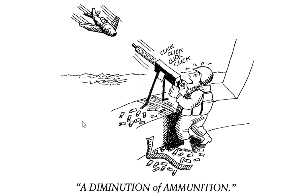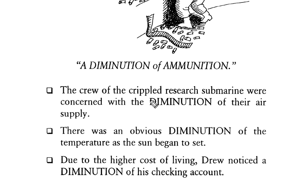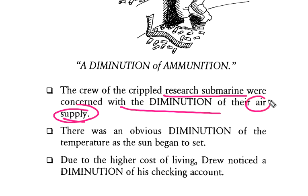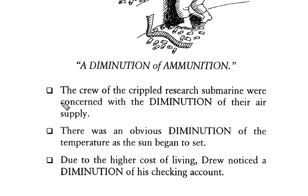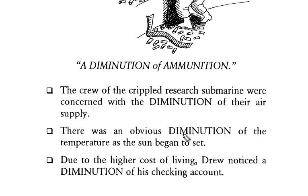Examples: The crew of the crippled research submarine were concerned with the diminution of their air supply — air supply unke kya horote te, khatam horote te, diminution of their air supply. There was an obvious diminution of the temperature as the sun began to set — sun jaise set ho raha tha, jaise jaise temperature kya horote te, khatam ho raha tha.